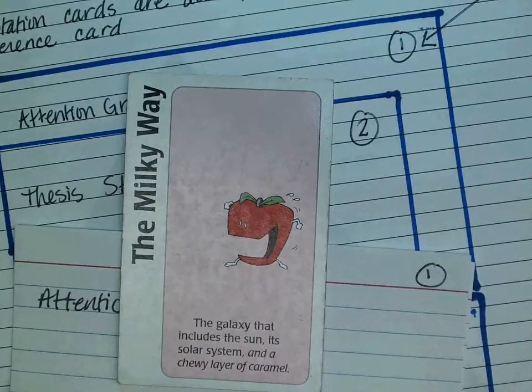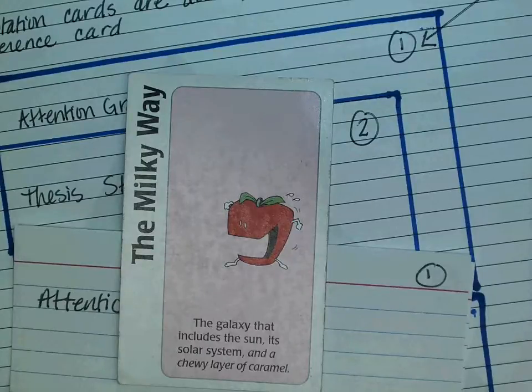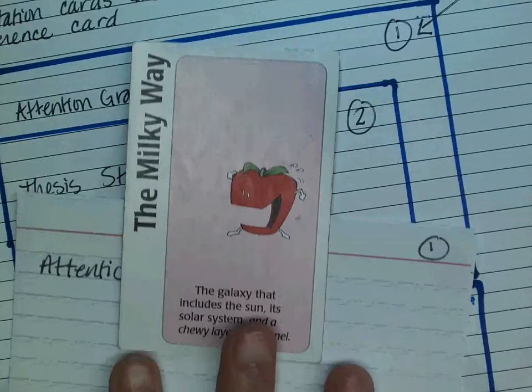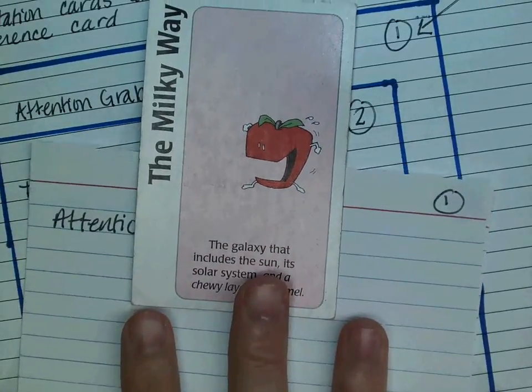This card is the Milky Way. It says the galaxy that includes the sun, its solar system, and a chewy layer of caramel. Unless you're from the Midwest and it's a chewy layer of caramel. Whichever way you want to say it. So students, what are some topics we could talk about related to this card?